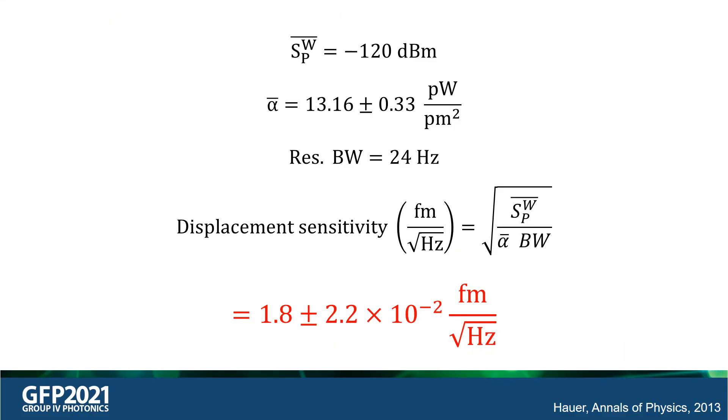By fitting the different thermomechanical noise peaks observed, the average white noise background Sp_w is determined to be -120 dBm. The average transduction factor alpha is found to be 13.16 picowatt per picometer squared. With these two parameters and resolution bandwidth, the displacement sensitivity can be determined using the equation shown here. The displacement sensitivity is found to be 1.8 femtometer per root hertz. This sets the minimum possible displacement that can be detected by our device and our transduction scheme, and the displacement sensitivity observed here is comparable to other MZI and MEMS-based optomechanical systems.